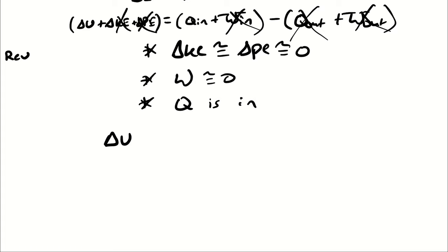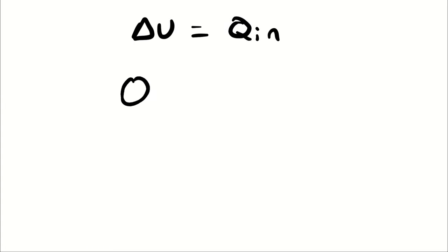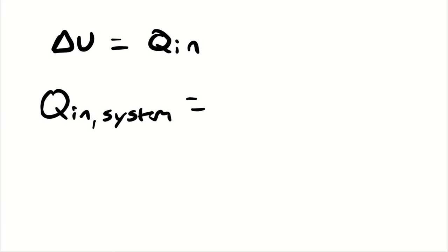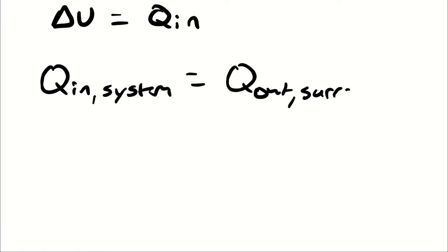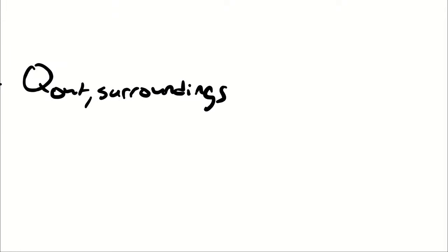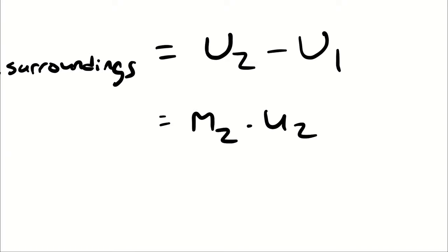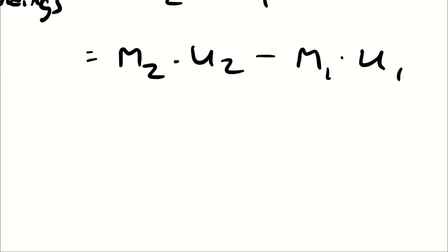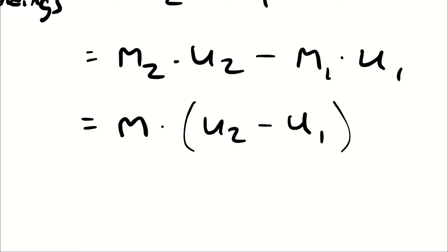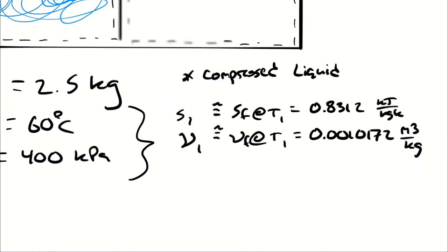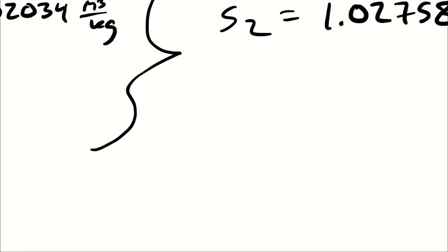This leaves delta U = Q_in, so Q_in to the system — which equals Q_out from the surroundings — equals total U2 minus U1, which I can write as mass times (u2 minus u1). Again, we are analyzing the system to find the heat transfer into the system, because it equals the heat transfer out from the surroundings. I now need to look up u1 and u2.